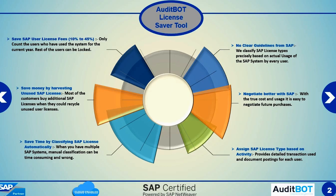Here are some of the key reasons why you should perform SAP license auditing and optimization. You can be in the driver's seat when you are negotiating with SAP for reducing your SAP license cost. Save time on classifying the SAP licenses. Assign SAP licenses based on activity and not on guesswork. Save money by harvesting unused SAP licenses.